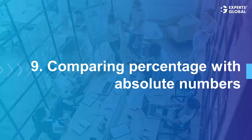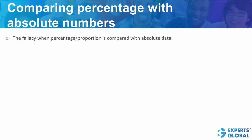The next fallacy is comparing percentages with absolute numbers. This happens when a proportion is compared with absolute data. For example, Jack improved his score by 200%, and thus he performed well. But what if his score was 1 out of 100? After the 200% increase, it becomes 3 out of 100, which may not be a good performance.